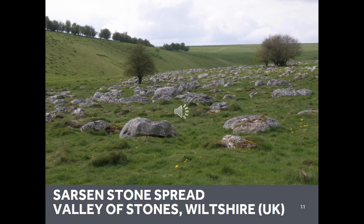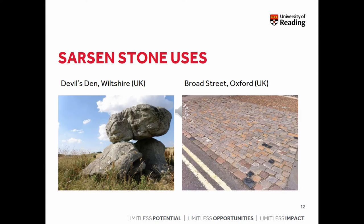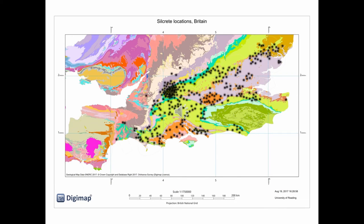In Britain, sarsen stone is scattered on the surface, like this spread of boulders lying in a valley in Wiltshire. Sometimes the boulders are shallowly buried in quaternary deposits. They are available here and there over a very wide area across south-east England. This is why I call this an ephemeral quarry — there are no deep pits or underground quarry chambers. Sarsen stone is not limited to one outcrop. Sarsen boulders have been used since prehistory, like the dolmen Devil's Den on the left, right up to the present day, like these street sets on the right. Thinking about that dolmen and those street sets, think back to the chain operatoire and the importance of locating stone procurement to interpret human behaviour.